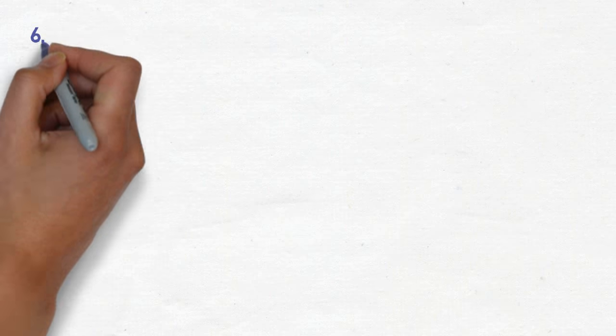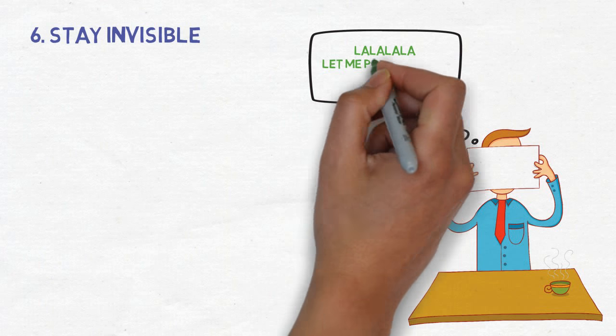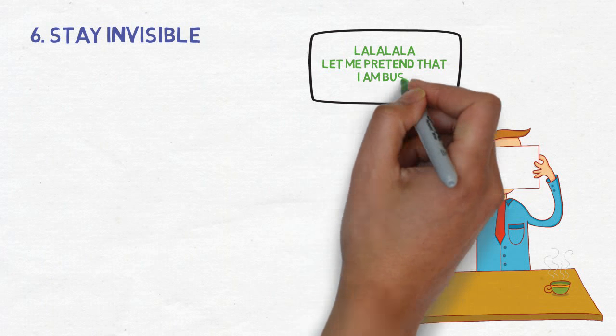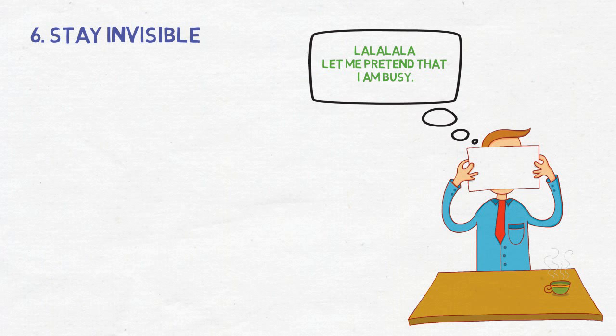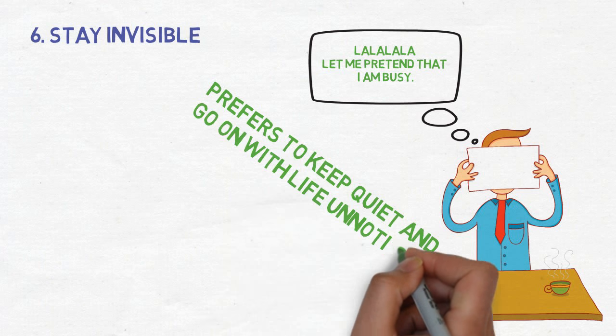Number 6. You try to stay invisible. People who do not have a strong opinion of themselves always try to fly under the radar. They are afraid of mistakes and making wrong decisions, because they believe that then others will find out what they knew all along, that they are just not worthy, smart, or capable. So they try their best to keep quiet and go on with their lives unnoticed.